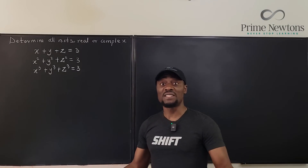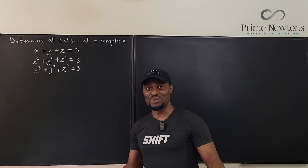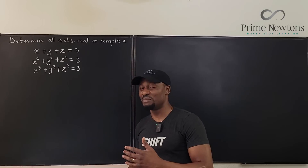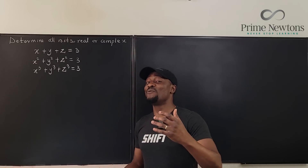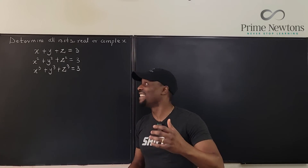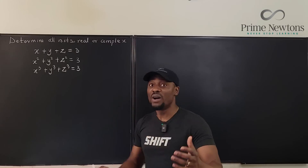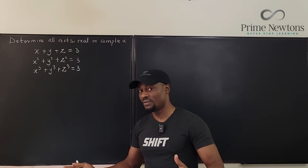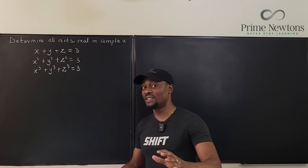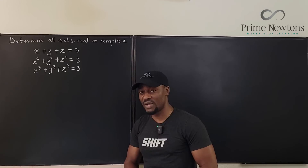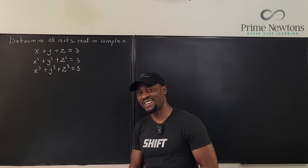The problem is they want us to find all roots, real or complex. You're not sure if that's the only solution, and since this is an Olympiad problem, it would be dangerous to just say the answer is (1,1,1). We want to show that we know what we're doing.